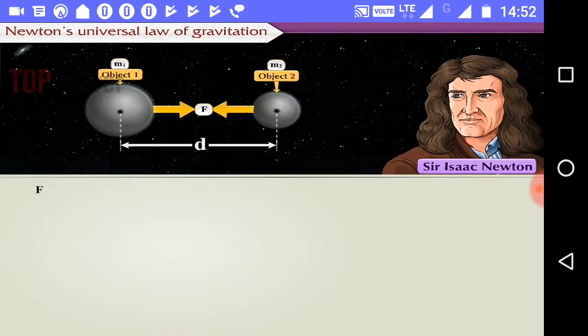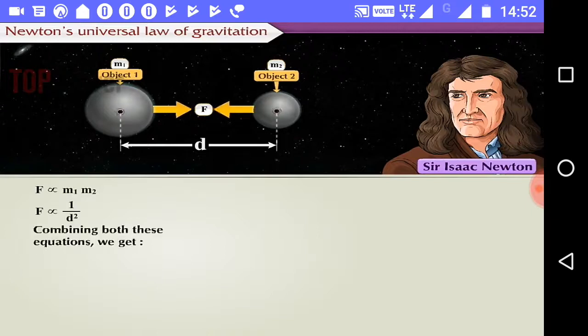F is directly proportional to the product of M1 and M2. Similarly, F is inversely proportional to D square. Combining both these equations, we get F is proportional to M1 into M2 upon D square.